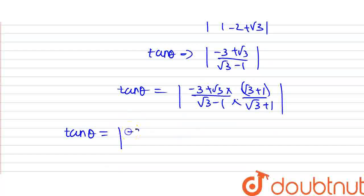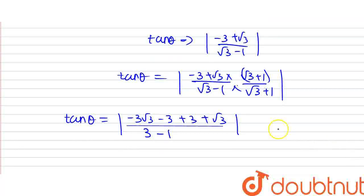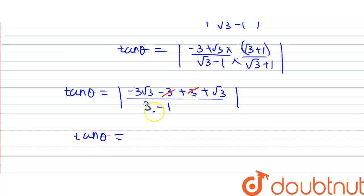So tan theta equals (minus 3 plus root 3) divided by (root 3 minus 1). The numerator is minus 3 root 3 minus 3 plus 3 plus root 3 after expanding. After cancellation, minus 3 and plus 3 cancel, leaving minus 3 root 3 plus root 3 equals minus 2 root 3. The denominator using a squared minus b squared: (root 3) squared minus 1 squared equals 3 minus 1 equals 2. So tan theta equals minus root 3, and taking modulus, tan theta equals root 3, giving theta equals 60 degrees.